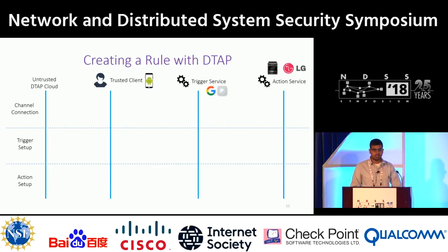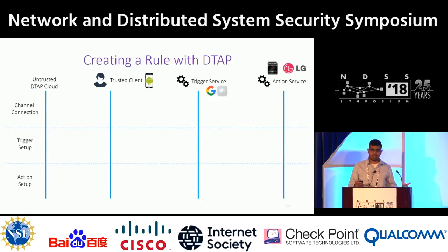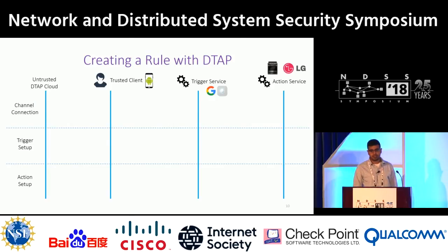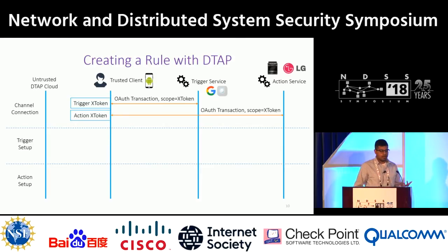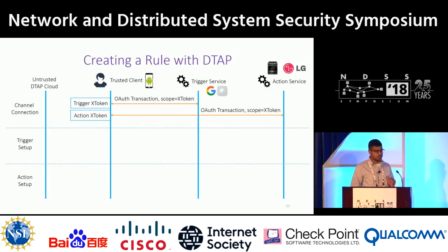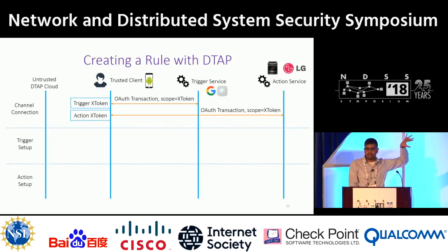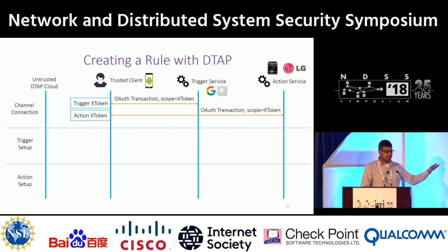Say these are new devices, so first you have to onboard them — a channel connection step. The trusted client, on behalf of the user, creates an OAuth transaction with the goal of negotiating an X token. These are the high-power tokens that let you exchange for recipe-specific tokens. The key point is that these X tokens never leave the trusted client for that specific user — they never leave that device.